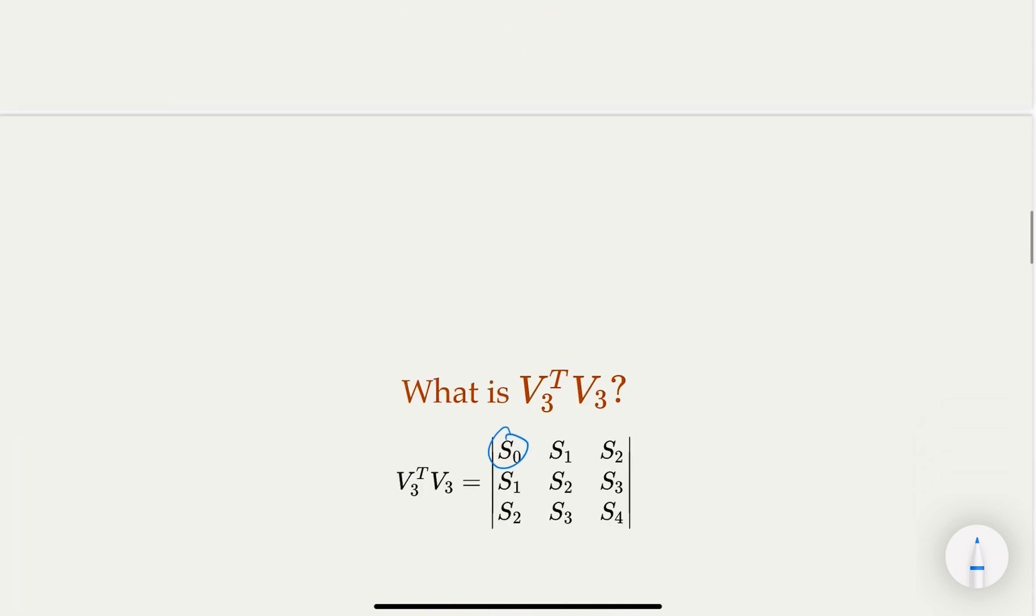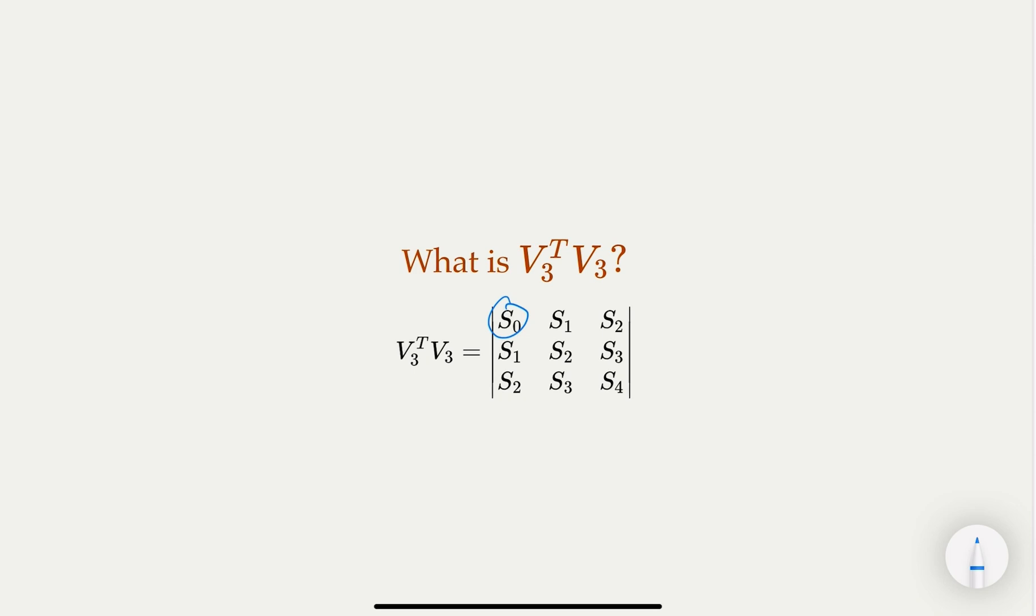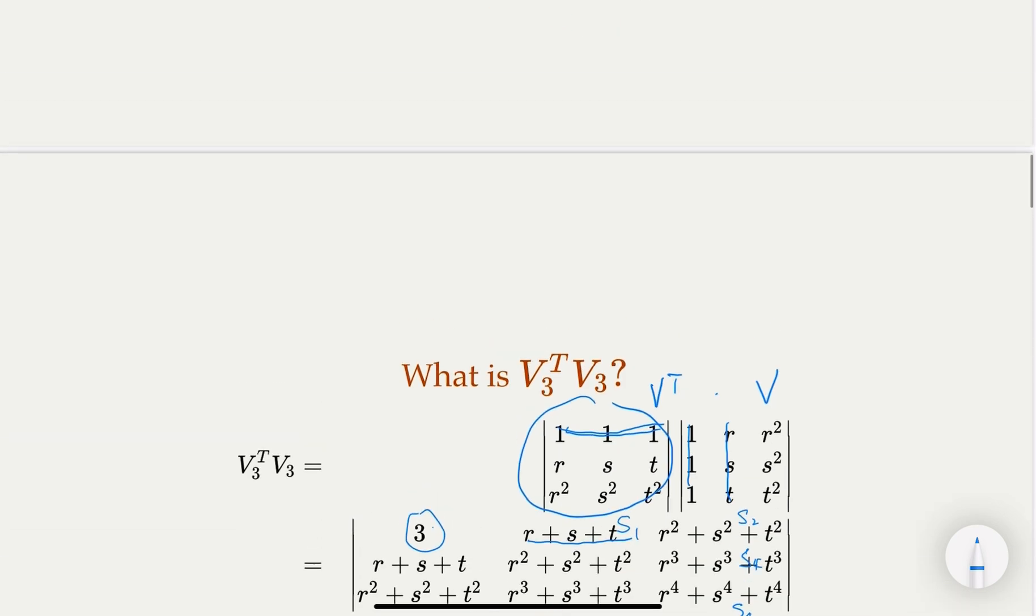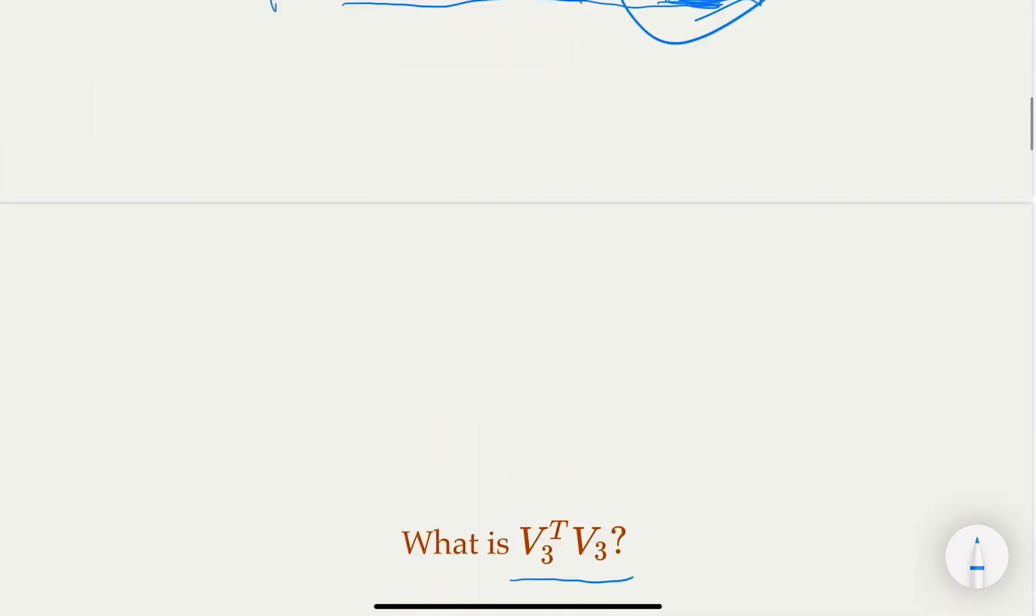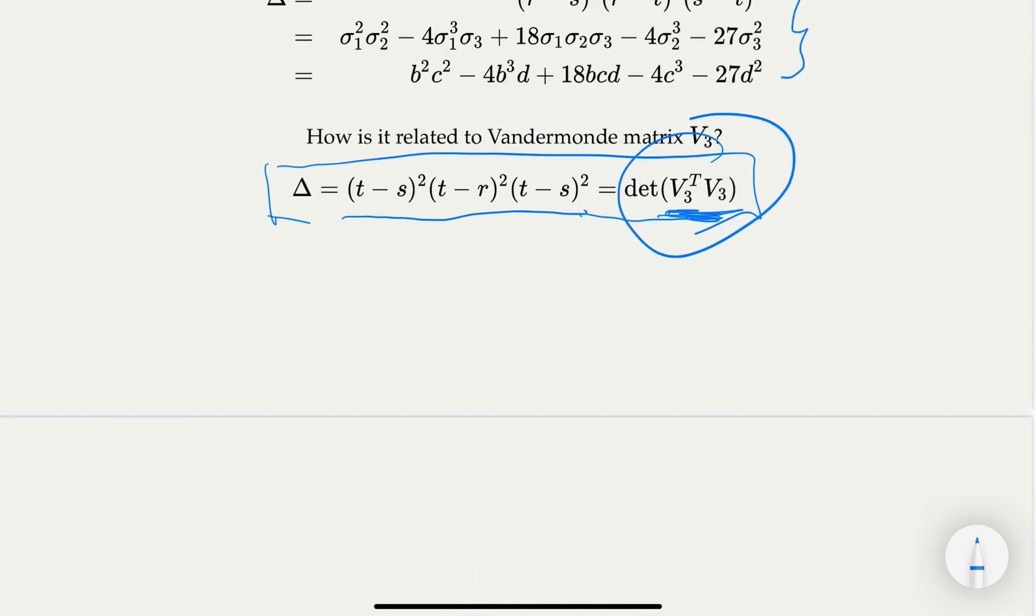So we rewrite the matrix using the S sub k notation. And we know that the determinant of this matrix is the determinant that we're looking for.